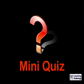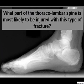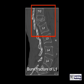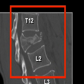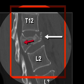Mini quiz: what part of the thoracolumbar spine is most likely to be injured with this type of fracture? If you said T12, L1, or L2, you would be correct. In this individual who jumped from the top of a 12-foot ladder and landed on his feet, there is a burst fracture of L1 in which the anterior aspect — indicated by the white arrow — is markedly diminished in height, with retropulsion of posterior fragments into the spinal canal.